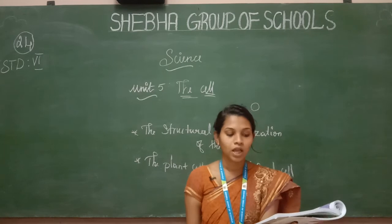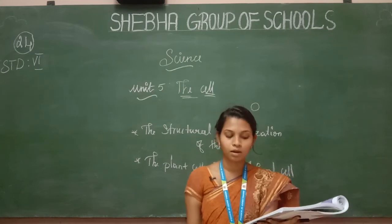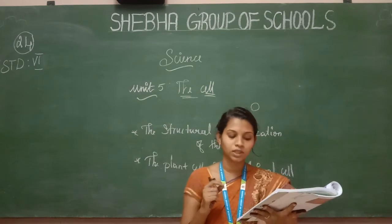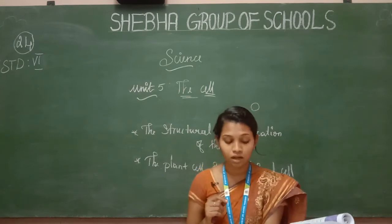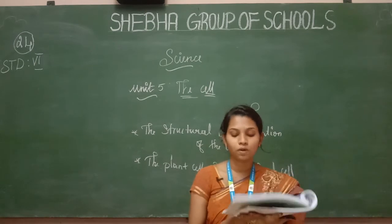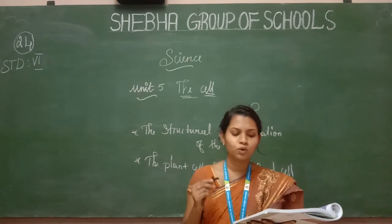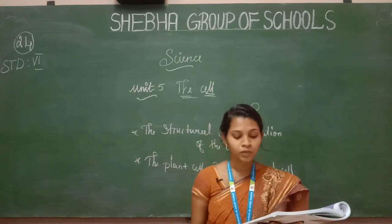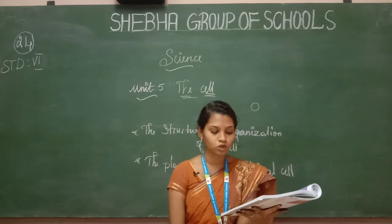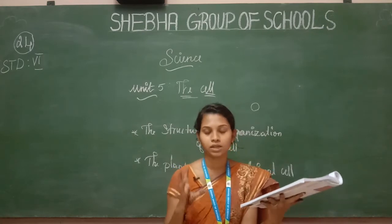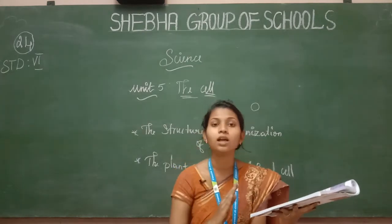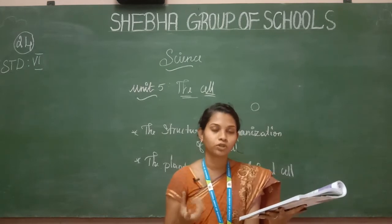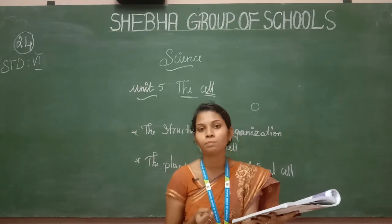Next is the size of the cell. The cell may vary from micrometers — a micrometer means one millionth of a meter — to a few centimeters. Most cells are microscopic and cannot be seen with the naked eye; only a microscope can be used to observe them.